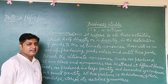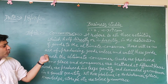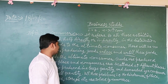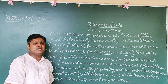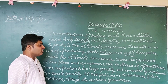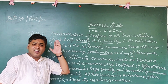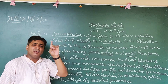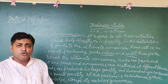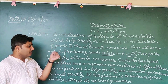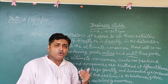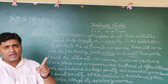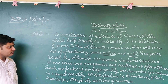There will be no use of producing goods unless and until these goods reach the ultimate consumer. A restriction has been placed here: those activities will not be included in commerce unless the goods have reached the consumer. Activities through which goods do not reach the consumer will not be included under commerce.